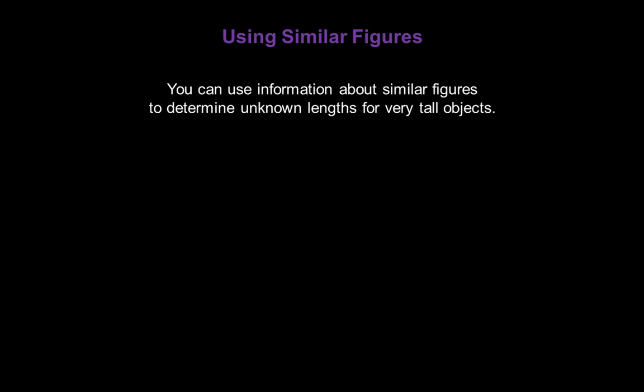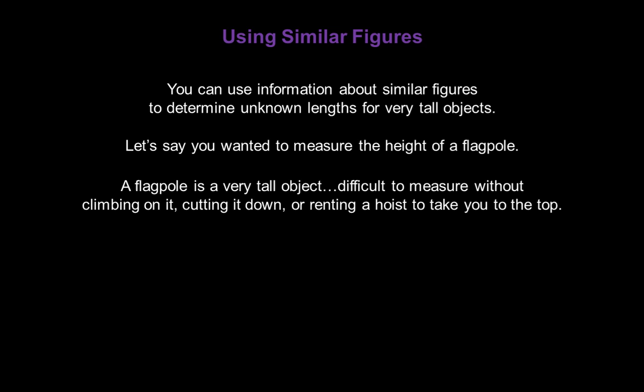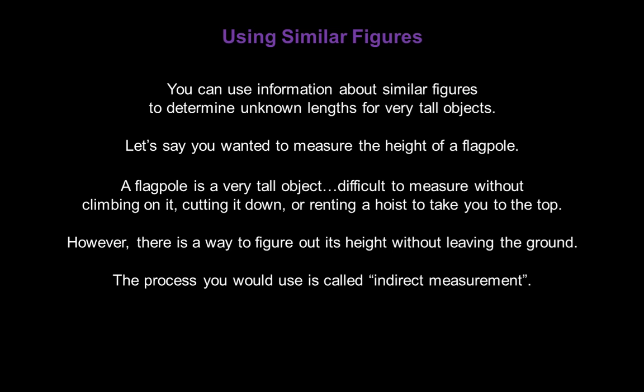You can use information about similar figures to determine unknown lengths for very tall objects. Let's say you wanted to measure the height of a flagpole. Now a flagpole is a very tall object. It's difficult to measure without climbing on it, cutting it down, or renting a hoist to take you to the top. However, there is a way to figure out its height without even leaving the ground. The process you would use is called indirect measurement.